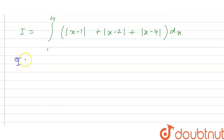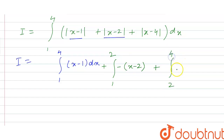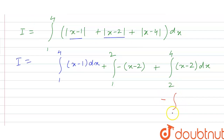So I will be set up by opening each modulus term. The first term, integration of 1 to 4 of (x minus 1), we split the limit: from 1 to 2 it opens with minus sign, and from 2 to 4 it opens with positive sign, giving (x minus 2). The last term, (x minus 4), is always negative for any value of x from 1 to 4.